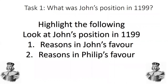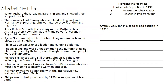The first thing we need to understand is what was John's position in 1199 - so when John became King of England, what was his position? We need to understand what reasons John had in his favour in 1199, and then what reasons Philip had in his favour in 1199.